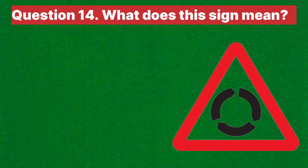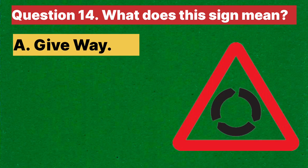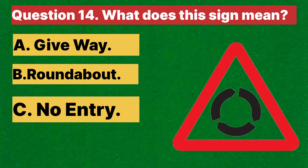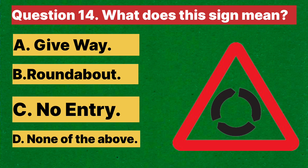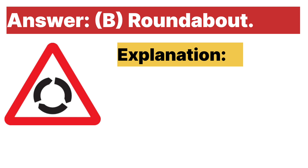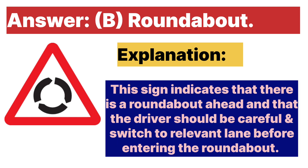Question fourteen: What does this sign mean? A. Give way. B. Roundabout. C. No entry. D. None of the above. Answer is B, roundabout. Explanation: this sign indicates that there is a roundabout ahead and the driver should be careful and switch to the relevant lane before entering the roundabout.